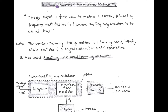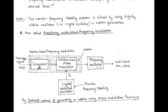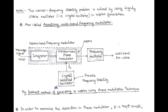In the indirect method, the input is the message signal. We first generate narrow band FM by using an integrator, followed by a narrow band phase modulator, with a sinusoidal carrier signal as another input. The sinusoidal carrier is generated by a crystal controlled oscillator that provides frequency stability to the whole system. The generation of narrow band FM has already been discussed in the previous video lecture. This narrow band FM is then converted into wide band FM using a frequency multiplier.